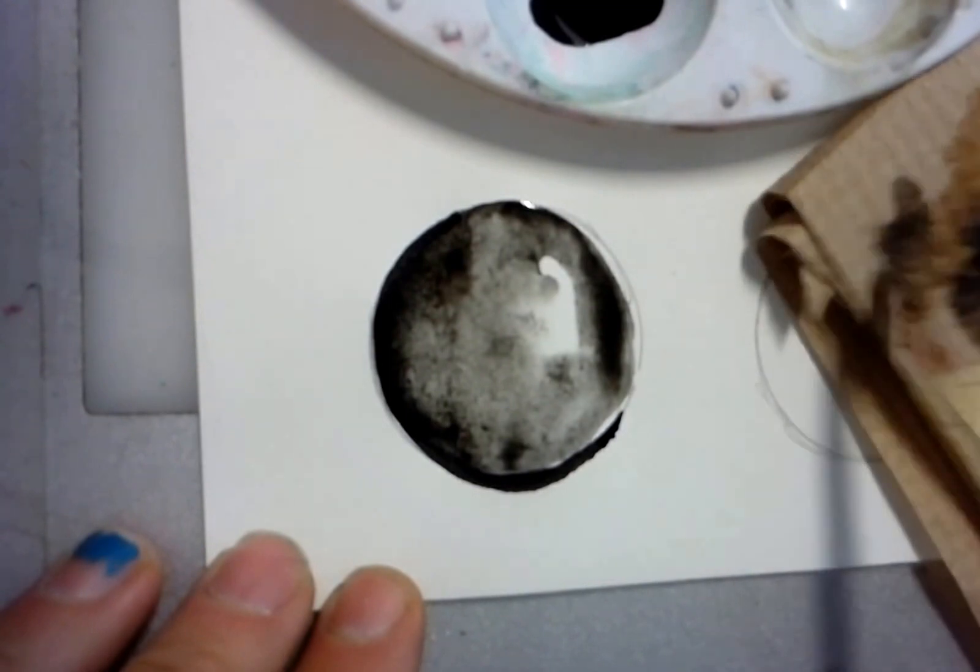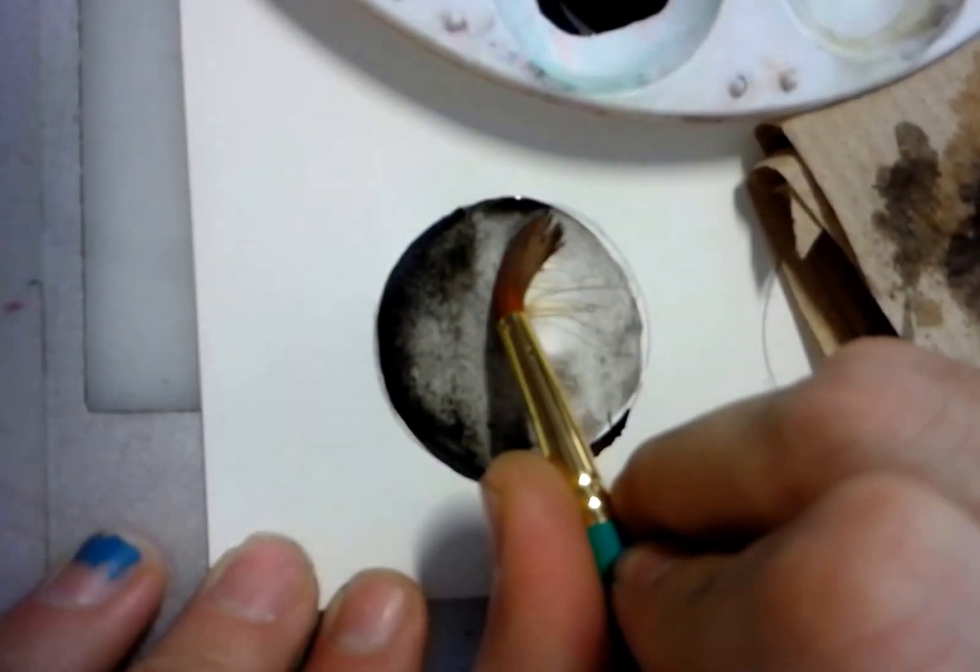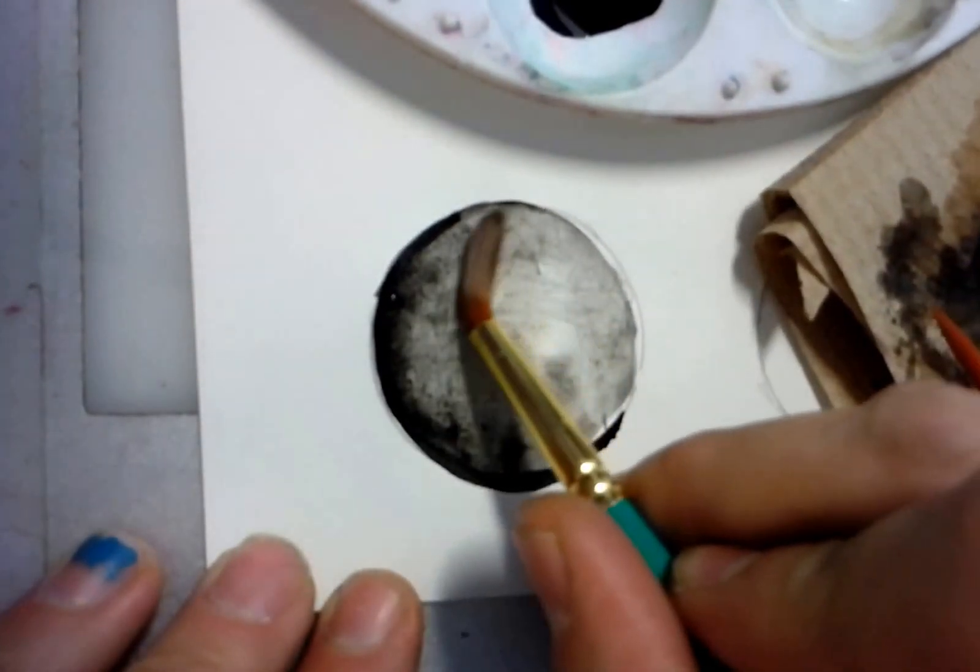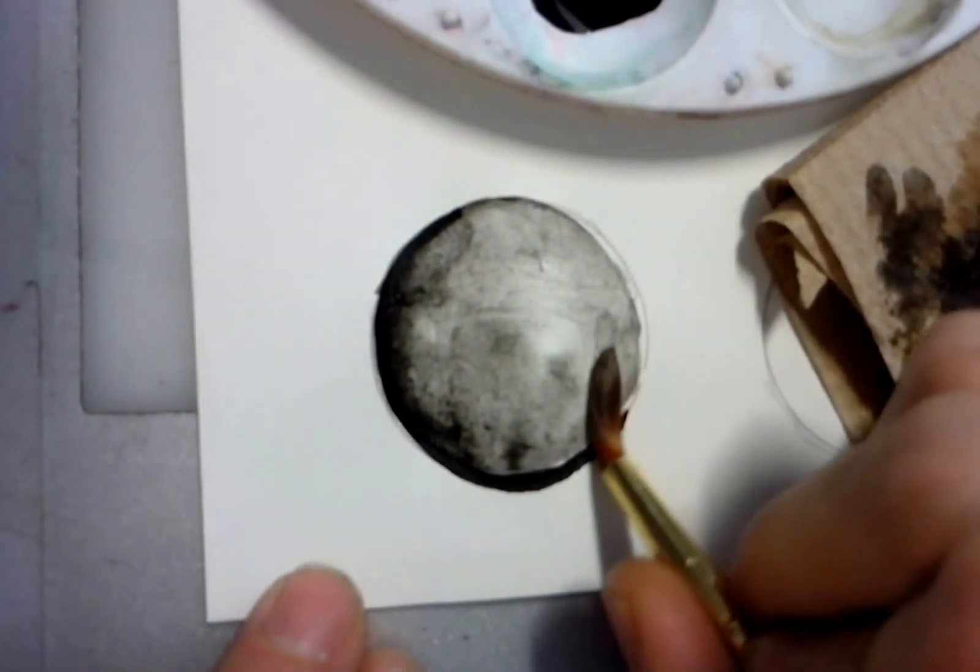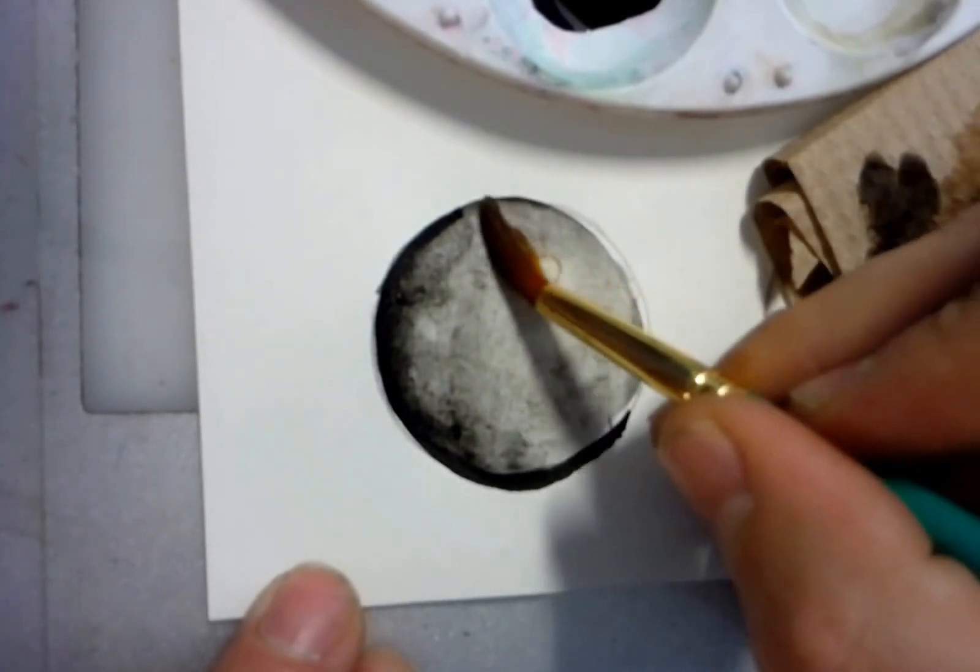So if you feel like your value is too dark, you can literally dry off your brush completely and then do what's called mopping—and you literally, it's just like mopping a floor. You mop up a little bit, dry it off on your paper towel, mop up a little bit, dry it off on your paper towel.